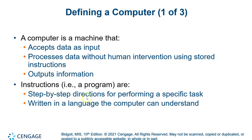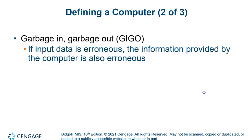Computers need very specific step-by-step directions or instructions, which are called a program or a computer program. There are many different languages that humans understand, and they get translated so a computer can understand them. One of the most common terms you'll hear in computer programming is GIGO — garbage in, garbage out. Basically, if you put bad data in, it's going to come out bad on the other end.